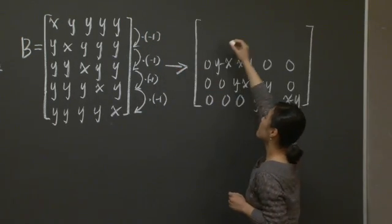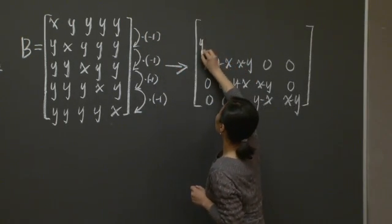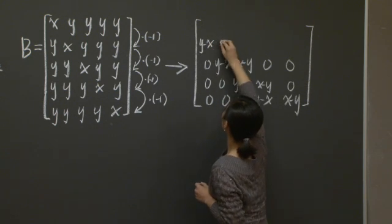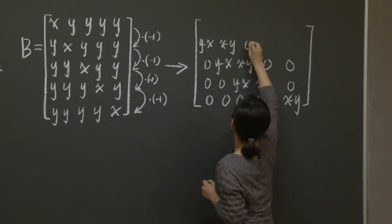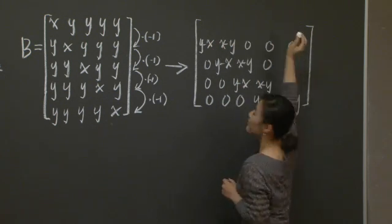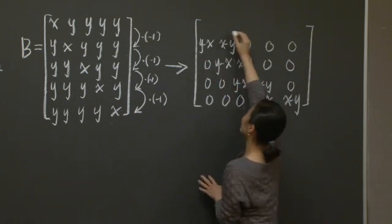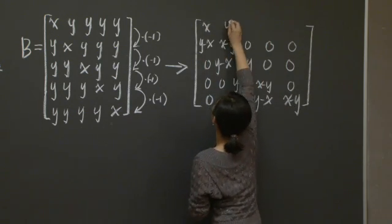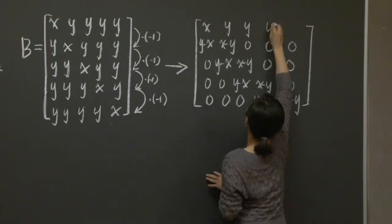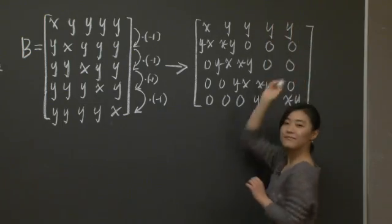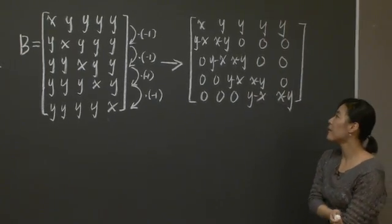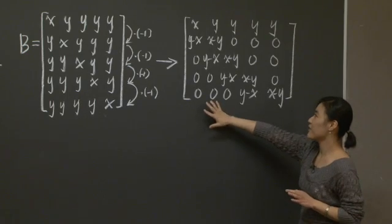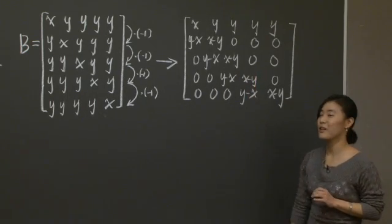And then you update the second row to y minus x, x minus y, 0, 0, 0. Let's keep the first row unchanged. So I'm going to copy it here. All right. By row elimination, we have introduced many zero entries to matrix B.